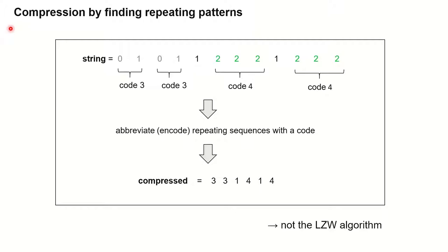Before we have a look at the actual LZW algorithm, I'll give you a bit of an intuition of how compression by finding repeating patterns works. So that's the string we have seen in the previous slide. And in this sequence of numbers, you see some repeating patterns. For instance, zero and one in a row appears here, but it also appears later. And these three numbers in a row, we also see the same sequence again.